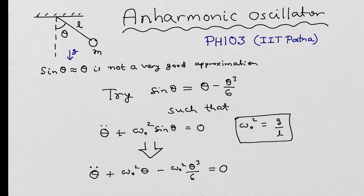I expect students enrolled in PH103 to go through the video carefully and post me any queries they have at the email address given at the end of the video. A typical example of an anharmonic oscillator is a simple pendulum where the angle of oscillation is not small enough.